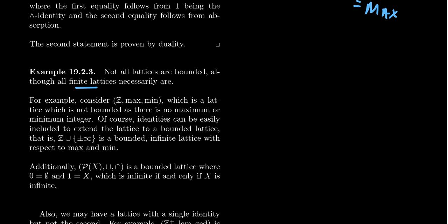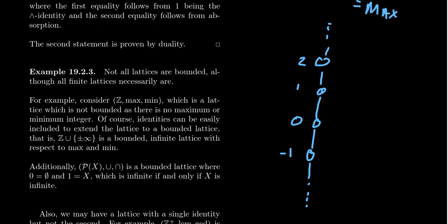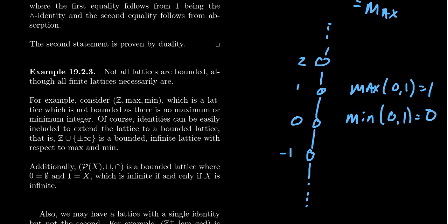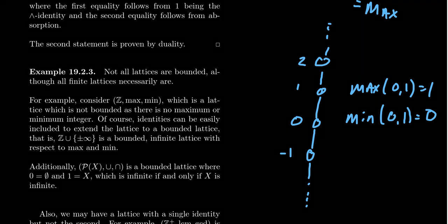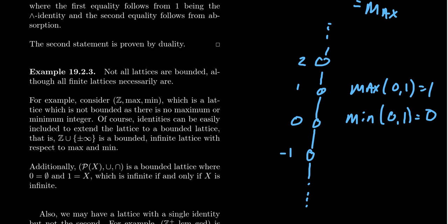You can have infinite lattices that are not bounded. For example, take the integers where the operations are max and min. This gives an infinite chain — you can picture 0, 1, 2 going up and negative 1 going down — where max makes you go up and min makes you go down. The integer lattice doesn't have built-in identities, so it's an example of an infinite lattice that is not bounded.